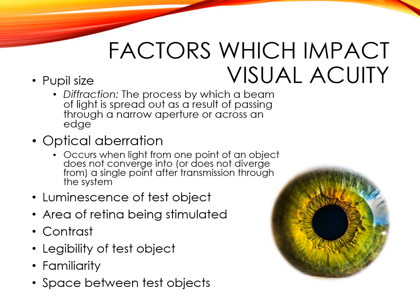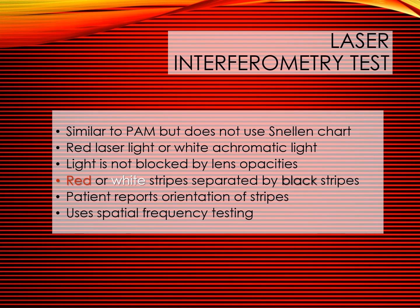The area of the retina being stimulated can also impact visual acuity. Visual acuity is greatest at the center of fixation, which is the fovea. The fovea has the greatest visual acuity due to densely packed cones, so once the image is moved away from the center of visual fixation, visual acuity is affected. Contrast also affects visual acuity, as does the legibility of the test object and the patient's familiarity with it. The space between test objects also influences visual acuity. The laser interferometer test is a visual preferential test similar to the PAM, but uses red or white stripes separated by black stripes — a form of spatial frequency testing.